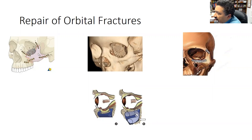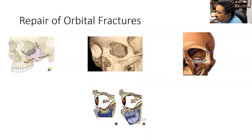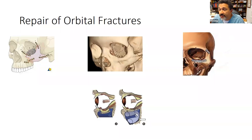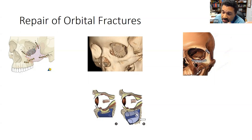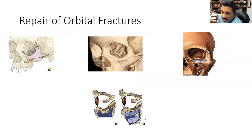Repair involves fixing the zygomatic arch and placing a mesh or netting to reconstruct the orbital floor. Oral maxillofacial surgeons typically perform this, sometimes with an ophthalmologist present. Post-injury, patients may have visual disturbances from blood in the vitreous, which takes time to clear, or retinal detachment from the injury force. The cornea, lens, vitreous, and retina can all be affected.